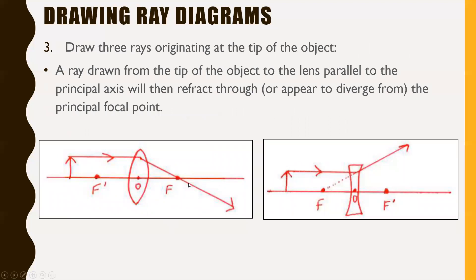For drawing the ray diagram itself, it's pretty much the same as it was for mirrors. The first rule: a ray drawn from the tip of the object to the lens parallel to the principal axis will then refract through — or appear to diverge from — the principal focal point. For a convex lens, that light ray refracts at the center of the lens towards the focal point. A concave lens makes it refract away from that focal point, but the dotted line still passes through it.